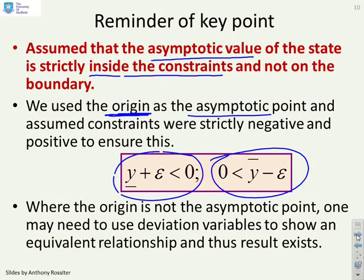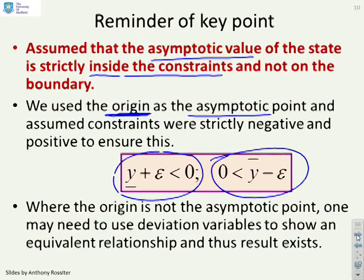Now, where the origin is not the asymptotic point, you may need to use deviation variables to show an equivalent relationship and result exists. But generally, we might not be mathematicians. We might not be too bothered about the detailed proofs.